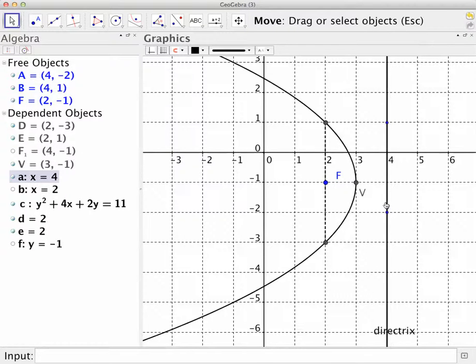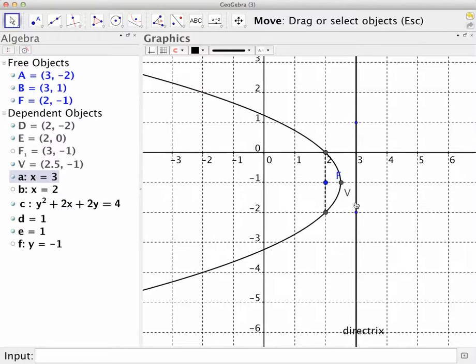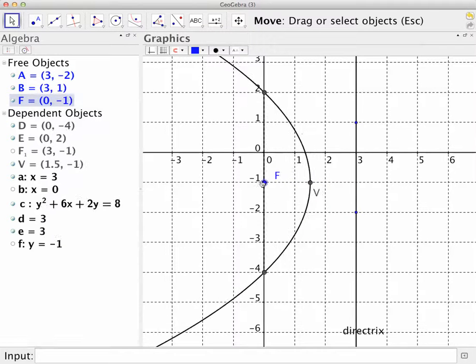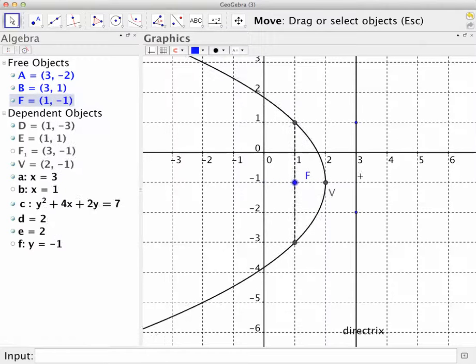You see that when I'm on integer values, I'm actually getting nice equations, or nice enough. When I'm in between, I'm getting really gross equations, but that's okay.